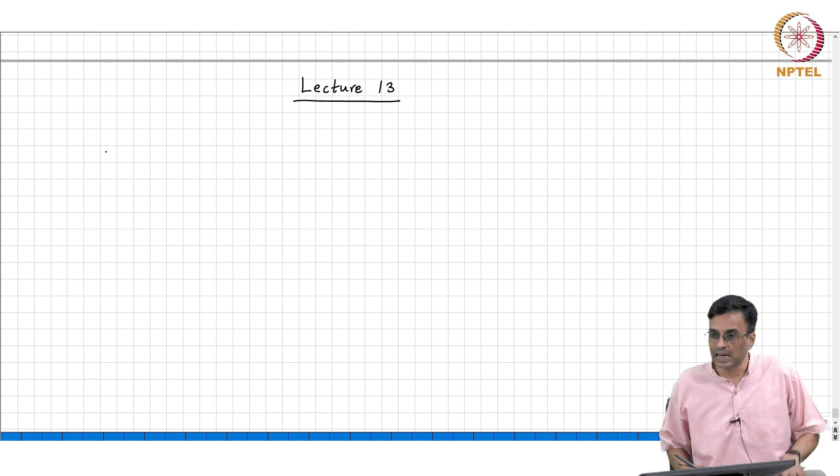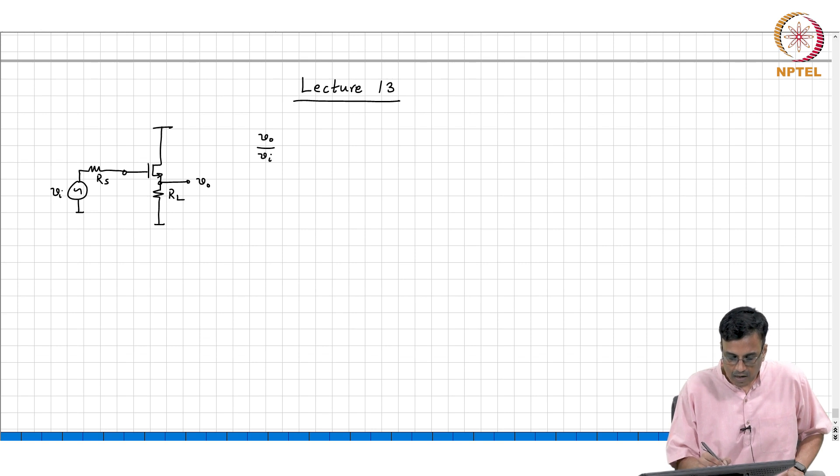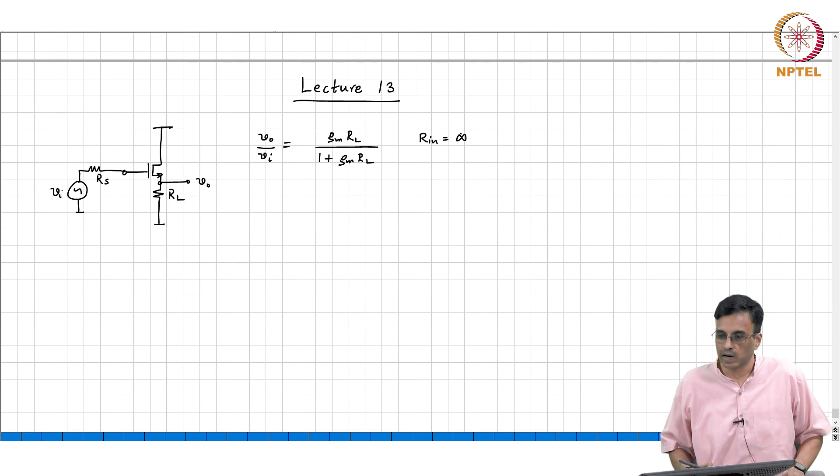We started off a journey with deriving the incremental voltage controlled voltage source with a gain of 1, and we said that the incremental equivalent looks like this. The incremental gain Vo by Vi is Gm*RL over 1 plus Gm*RL. The input impedance is infinite owing to the zero current nature of the MOSFET. The output resistance is 1 over Gm, and the discussion yesterday indicated that if Gm tends to infinity, the incremental gain will tend to 1.